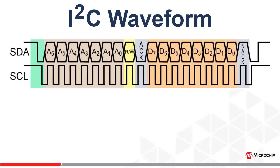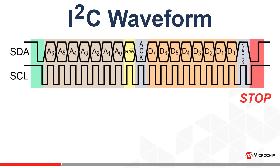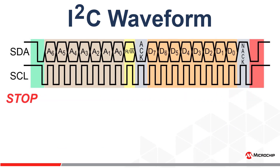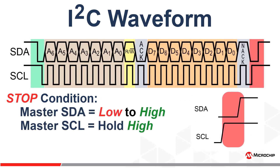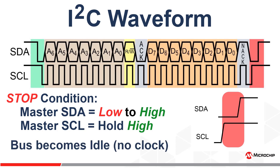And finally, the last section of the I2C protocol is the stop condition. All I2C transactions should be terminated with a stop condition. The stop condition is defined as the master releasing the SDA line while the SCL signal level is high. After a stop condition, the I2C bus will remain in an idle state and will be free for the next I2C transaction.